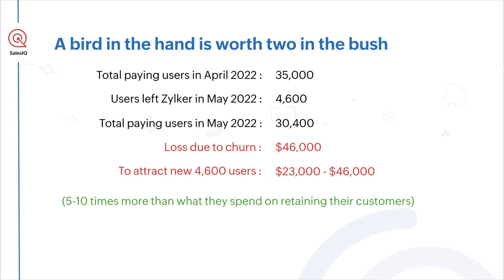What do we learn from these examples? Retaining your customers costs less than acquiring new customers. Churn is real, and if you are under the impression that there are countless fishes and your product can have a great catch every season, I am sorry to say you are mistaken. If you are not carefully providing value to your customers, they will leave you. You would have to spend more to acquire new customers. It is as simple as that.